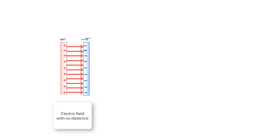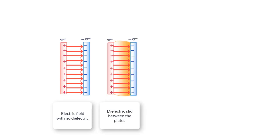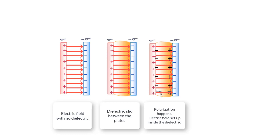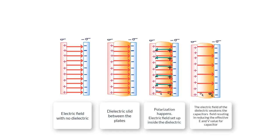Let us sum up by visualizing what happens when the dielectric is slid between the capacitor plates. First we have the original field with no dielectric. When the dielectric is inserted, initially no rearrangement of charges has happened. Then polarization of molecules occurs and induced surface charge appears on the dielectric. This induced charge sets up its own electric field that is opposite to the original field — not strong enough to cancel it, but it reduces the effective electric field. The resultant field strength is the vector sum of the two fields. The reduced electric field also implies lowering of the potential difference V and therefore an increase in capacitance C.